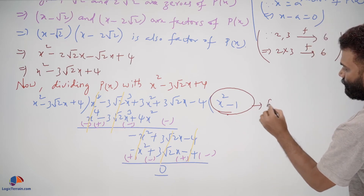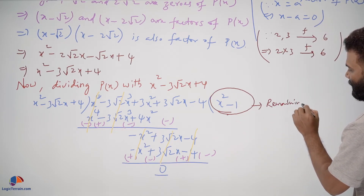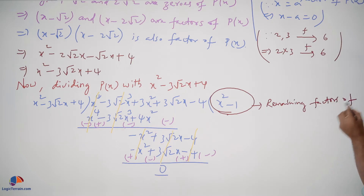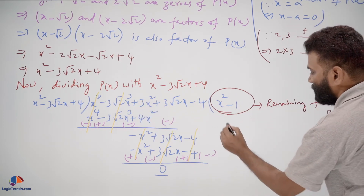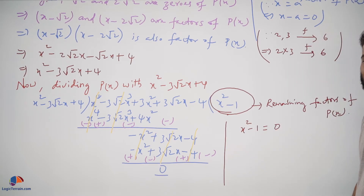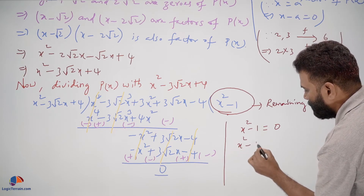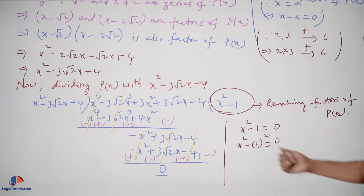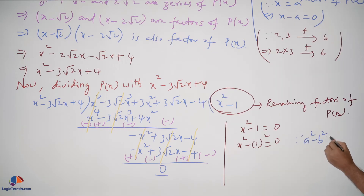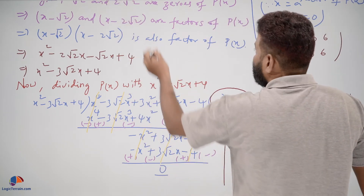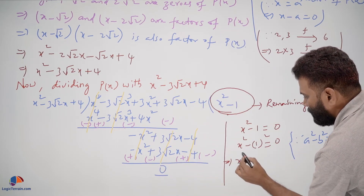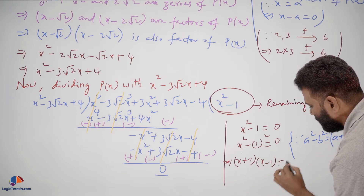The remaining factor of P(x) is x squared minus 1. Since it is a factor of P(x), we set x squared minus 1 equal to 0. We can rewrite x squared minus 1 as x squared minus 1 squared, which is a difference of squares — the algebraic identity a squared minus b squared equals (a plus b)(a minus b). So we rewrite this as (x plus 1)(x minus 1) equals 0.